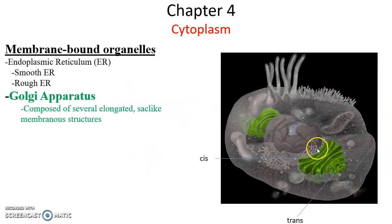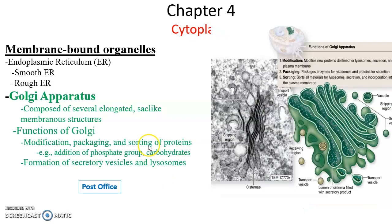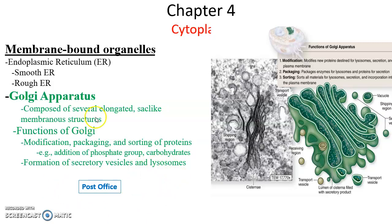The Golgi apparatus is composed of a collection of elongated, flat, sac-like membrane structures — kind of like a big stack of pancakes. Its function is to receive vesicles from the rough endoplasmic reticulum filled with proteins, then modify those proteins, repackage and sort them, and send them out through other vesicles. It adds things like phosphate groups or carbohydrates to proteins, then packages and sorts them to form either secretory vesicles going to the plasma membrane or to form lysosomes.